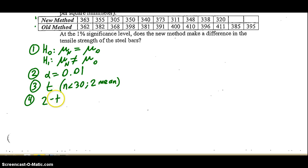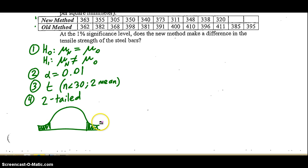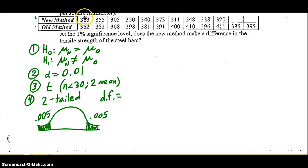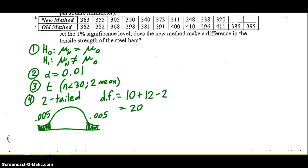Step four: this is a two-tailed test because it's not equal to. It's two-tailed, so the area is split between two tails — half of 1% is 0.005. For degrees of freedom with two means, you take both sample sizes: the first sample has 10 numbers, the second has 12. You subtract the number of samples, which is two. So 10 plus 12 is 22, minus 2 gives degrees of freedom of 20. Looking up 0.005 with degree of freedom 20, you get a t-score of 2.845, and the negative is negative 2.845.